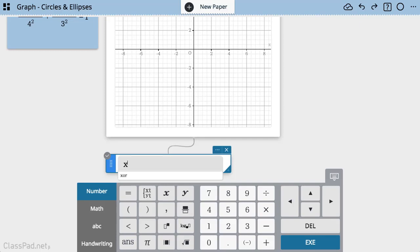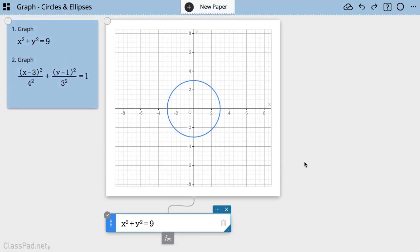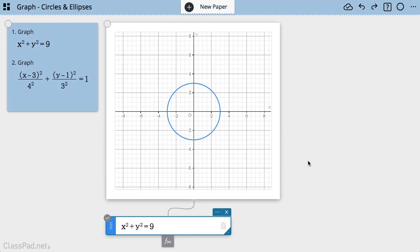And let's start with graphing the circle. So I'm gonna type x² + y² = 9. I'm gonna keep it simple. I'm gonna hit execute and there you will see is my circle. I don't have to actually convert this to a y equals. I can graph it in just that standard format.